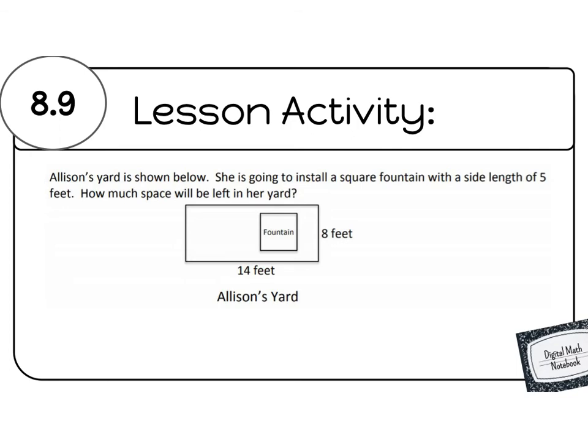So first off, we see that it is a square fountain and we need the space inside, right? How much space will be left in her yard? So we're not trying to find the perimeter. We're trying to find the area. So first off, we need to know how big her yard is. So the first step that we're going to do is find the area of the yard.